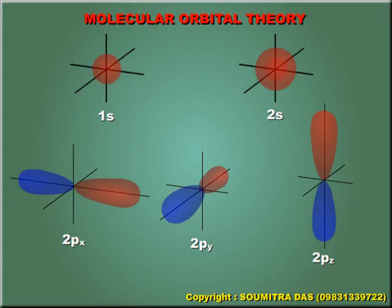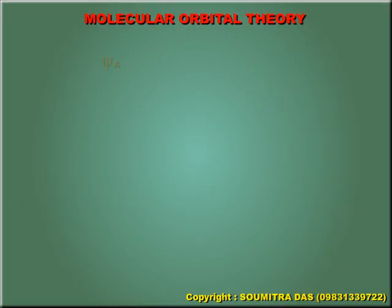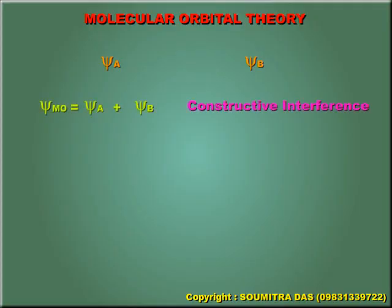As I have already mentioned, combination of atomic orbitals, say Xi A and Xi B, can happen in two ways. They may be added up, that is constructive interference, or they may cancel out each other, as in destructive interference.